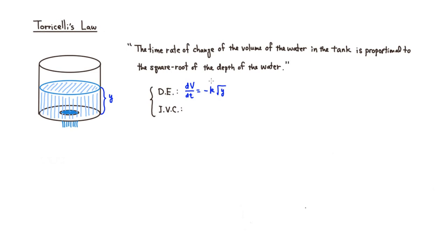The initial volume — let's say we have V₀ — so we can say V of 0 is equal to V₀. So that's the differential equation and initial value condition. They are both combined called the initial value problem. But we should probably wonder why square root of Y. So I'm going to pretend that I know some physics here. Here's an explanation.